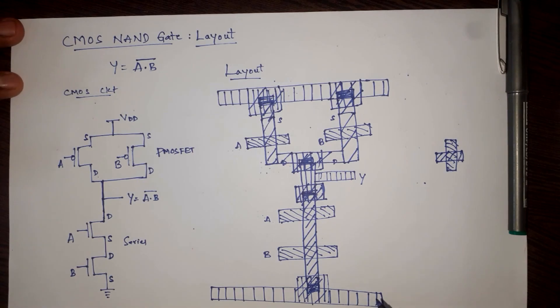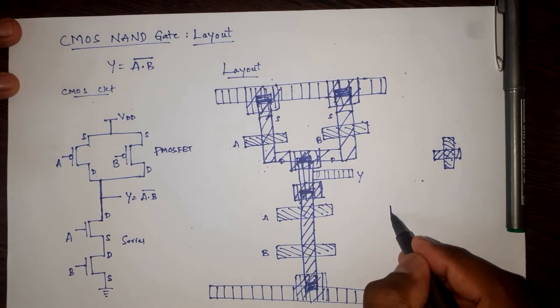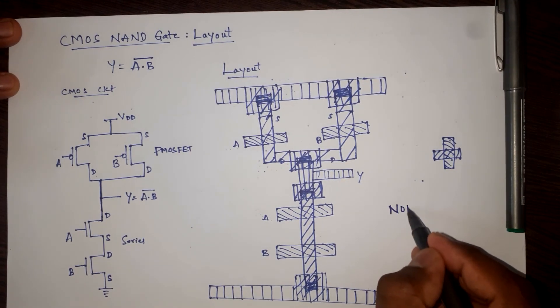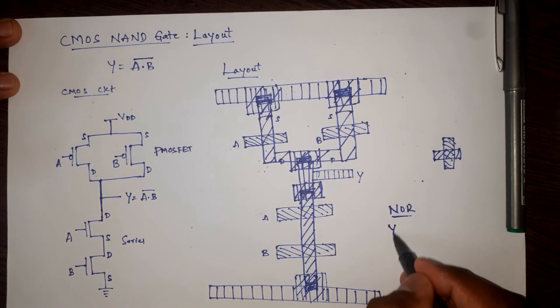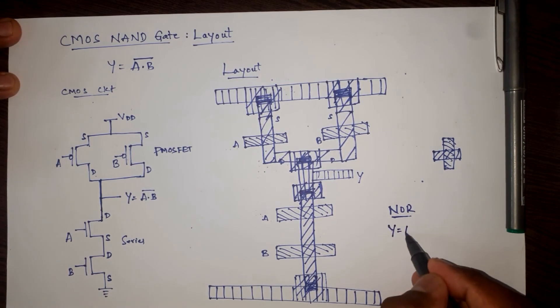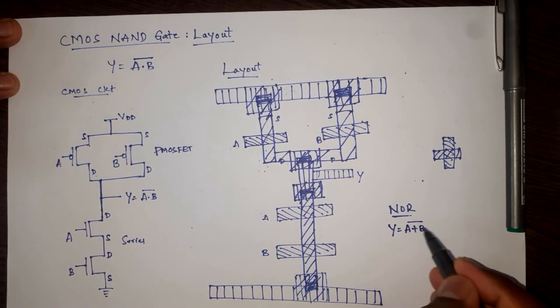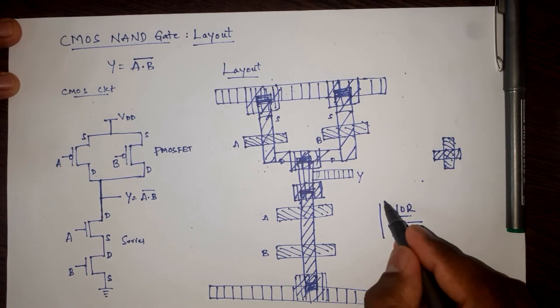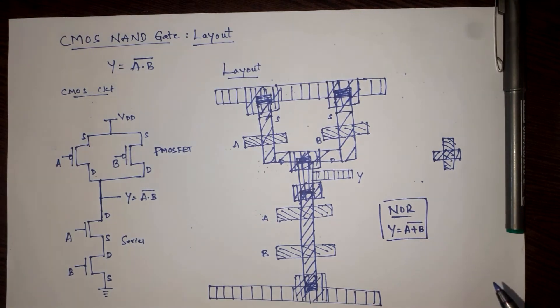This is how we write the layout for a CMOS NAND gate. In a similar way, we can also write the layout for a CMOS NOR gate, which has the expression Y is equal to A+B bar. Let us see this in the next video. Thank you.